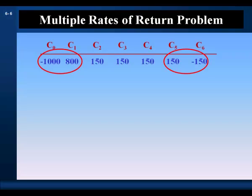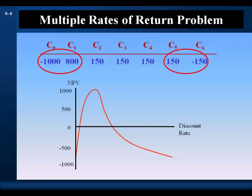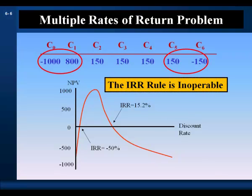This atypical cash flow stream has an atypical NPV profile. Mathematically, there are two discount rates that make net present value zero, and therefore by definition there are two internal rates of return. This is the non-uniqueness problem of multiple internal rates of return. When there's more than one change of sign in the cash flow stream, there's no unique IRR — in fact, there may be as many IRRs as there are changes in sign. These multiple IRRs render the IRR rule inoperable.